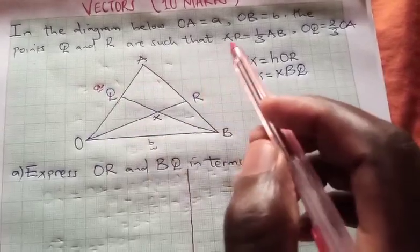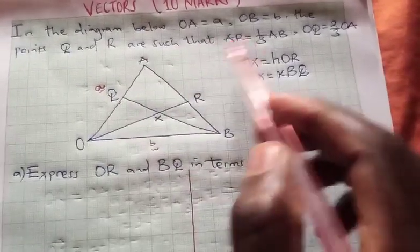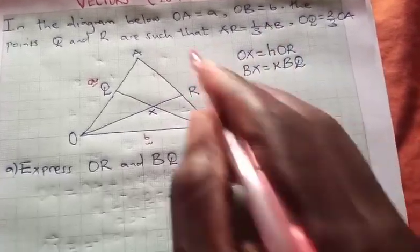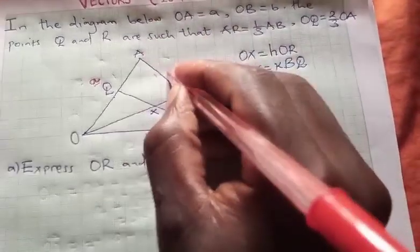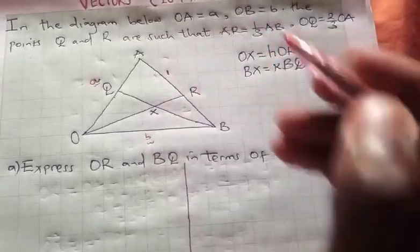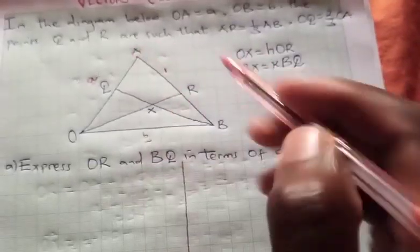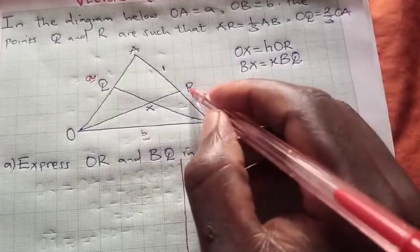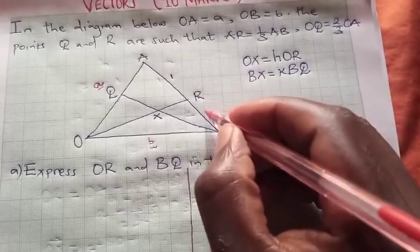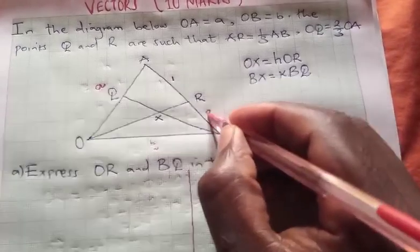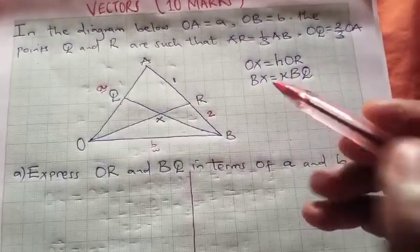It means that from A to R the fraction here is a third, and the whole of AB is in fact three. It means that the remaining part RB here we have two, which is going to make a total ratio of three. That is why we are saying AR is a third of the line.